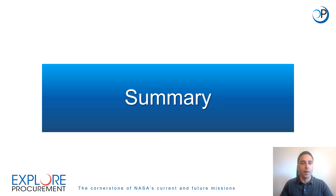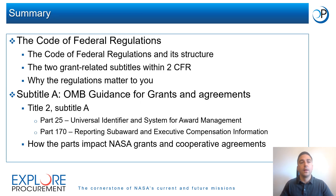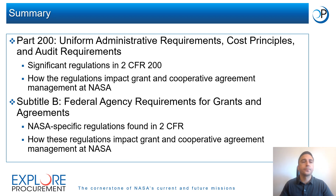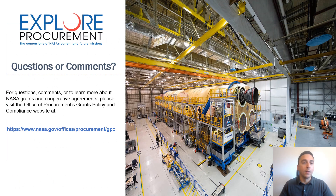In this course, you've been introduced to the Code of Federal Regulations and its structure, the two grant-related subtitles within it, and why the regulations are important to you and your entity. You also learned about relevant parts of Subtitle A, the significance of Part 200 and how its regulations impact NASA's management of grants and cooperative agreements, and how NASA's specific regulations in Subtitle B also impact grants and cooperative agreements management. Thank you very much for joining our training today on an introduction to 2 CFR. If you have further questions or comments, please feel free to reach out to NASA's grants policy and compliance team within NASA's Office of Procurement.